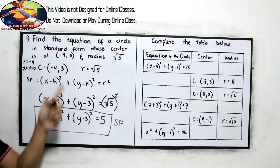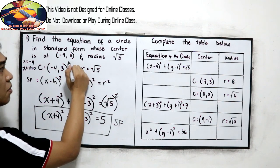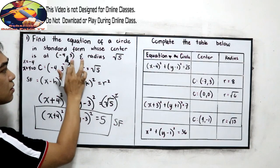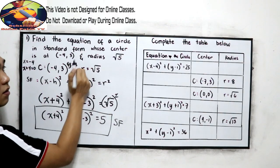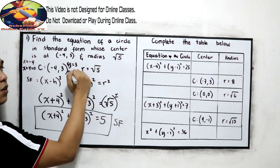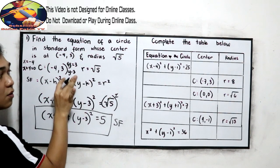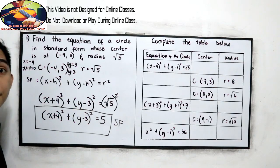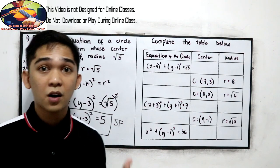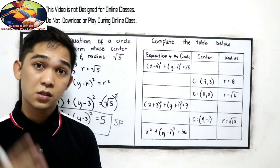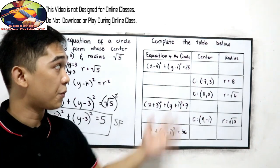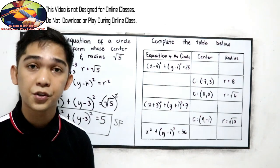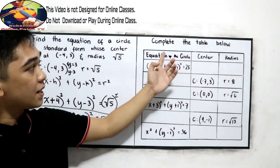Why does positive 3 become negative 3? Because y equals 3, and moving it to the left side gives y minus 3. Now we're going to find the relationship between the center, the radius, and the standard form — the equation of the circle — by completing the table below.